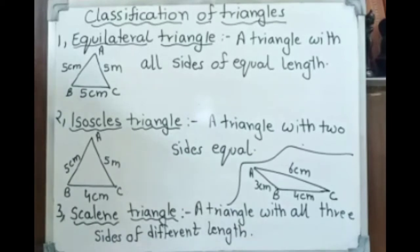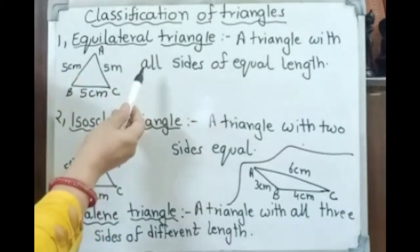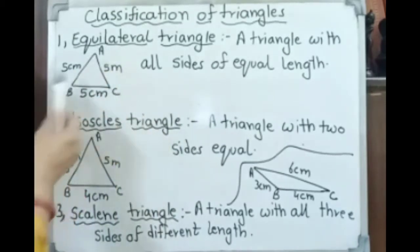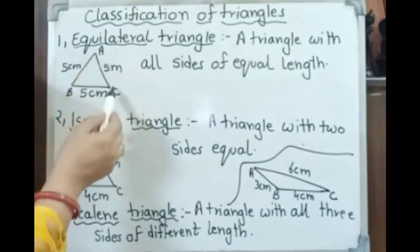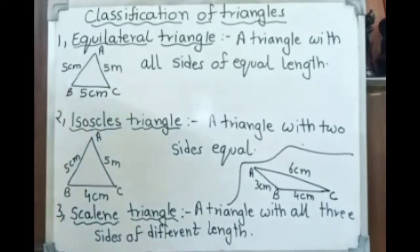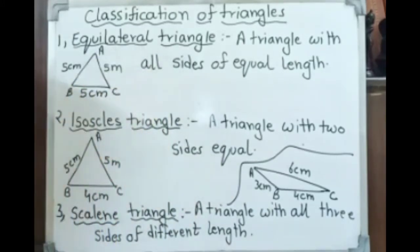First, equilateral triangle — a triangle with all sides of equal length. Here it is triangle ABC, with vertices A, B, and C. Sides AC, CB, and BA are all equal. A triangle with all sides of equal length is called an equilateral triangle.